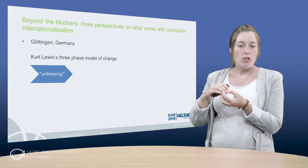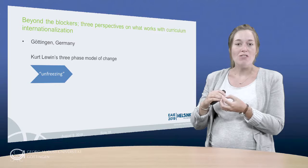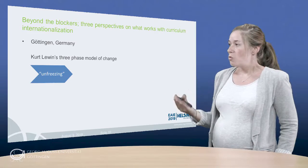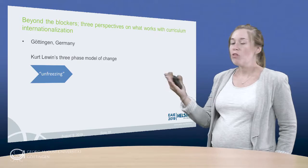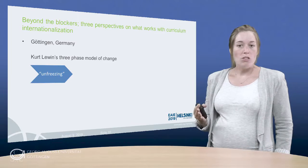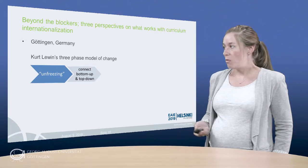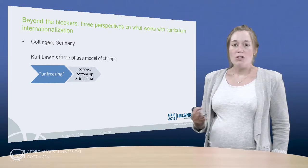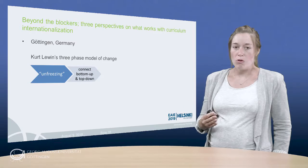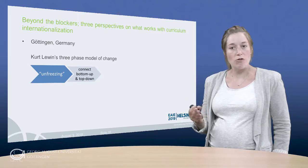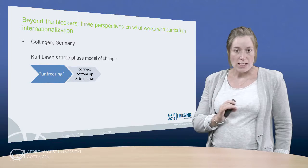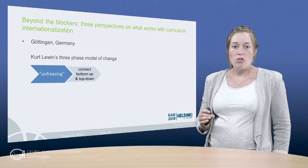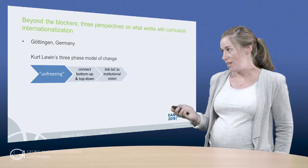This is why we placed a particular focus on the first of Lewin's phases, the one that he calls unfreezing, which is concerned with making the organization ready for change. We have transformed it to include different stakeholder groups directly from the beginning. We began with a number of conversations with different stakeholder groups, from the leadership to student representatives, to communicate, first of all, what IOC is, and secondly, to negotiate how we wanted to shape approaches to IOC that would fit our institutional context.